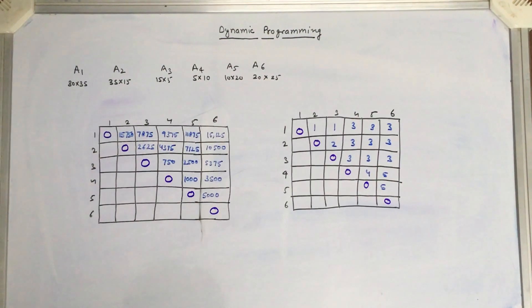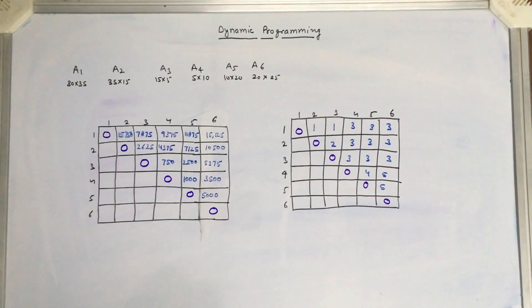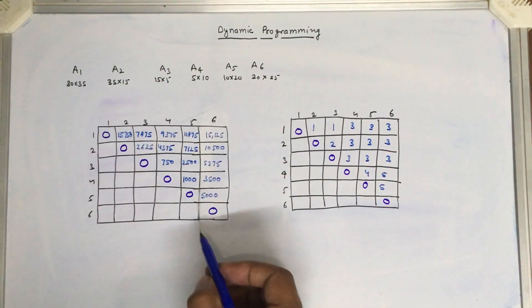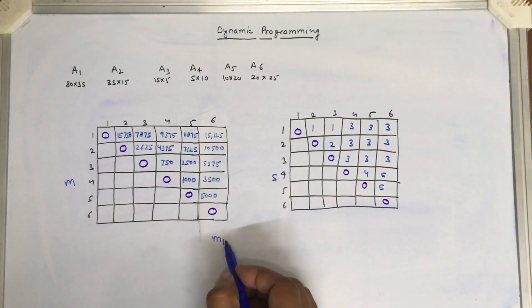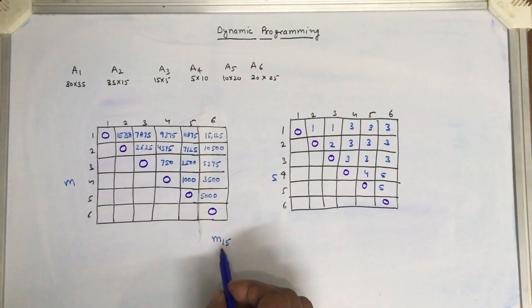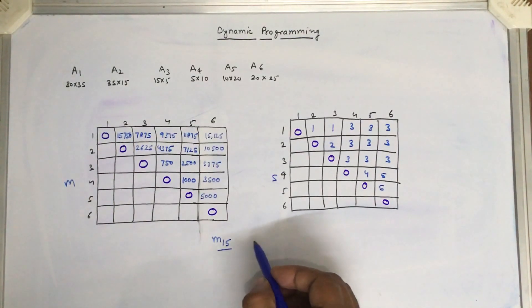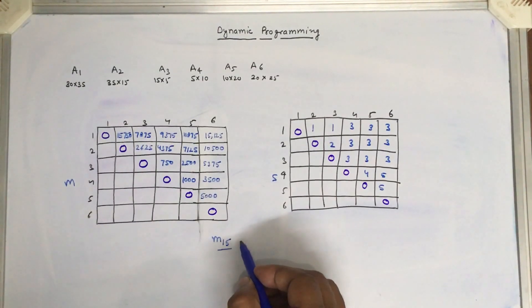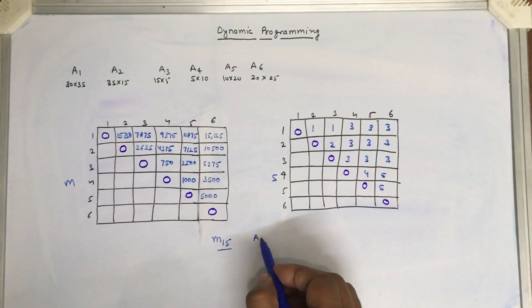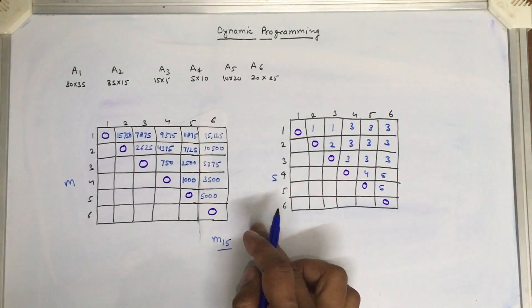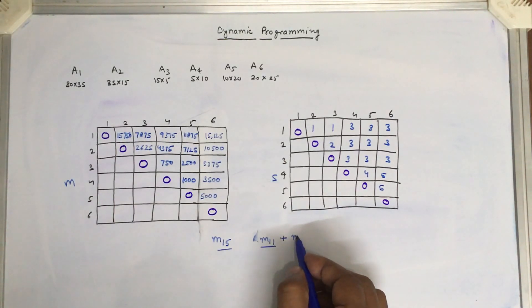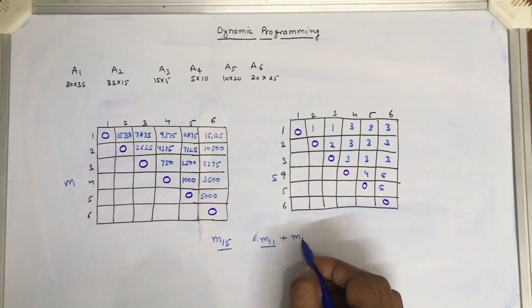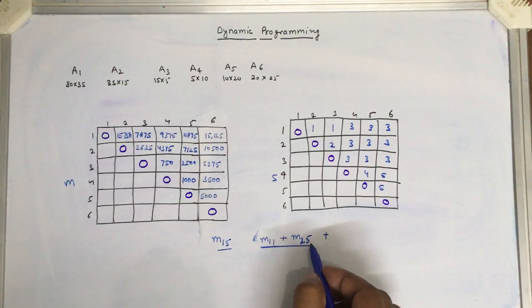This is the final matrix after all subproblems have been covered. I have skipped some steps, like computing the value for matrix m15 — the subproblem of having five matrices. You can find all the combinations for the m15 subproblem. This problem can be divided into different orientations: m11 plus the number of multiplications required for m12 (225), plus the total number of multiplications required by the resulting matrix.